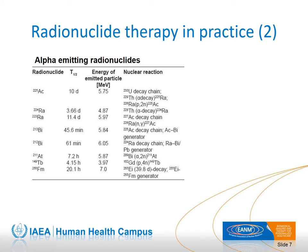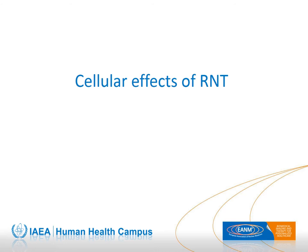The use of alpha-emitting radionuclides may increase in upcoming years, mainly due to the highly effective irradiation related to high linear energy transfer. However, it has to be realized that the irradiation may be highly effective but can cause very severe toxic effects and side effects when not used properly. In the following slides, we will have a closer look at the cellular effects of radionuclide treatment.